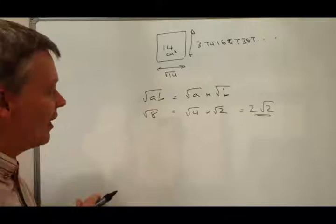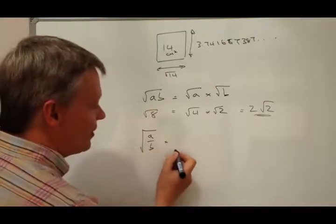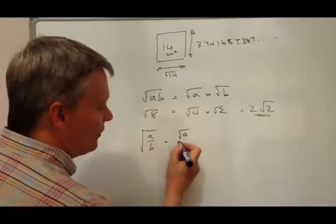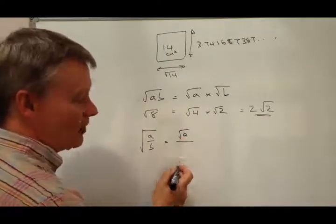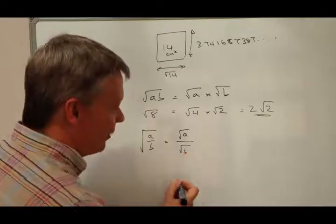The second one that you need to remember is the square root of a fraction is the same as saying the square root of the top bit which is the numerator divided by the bottom bit which is the denominator.